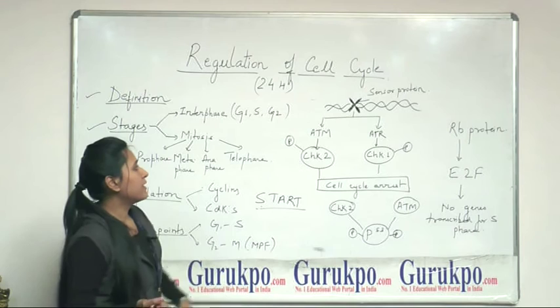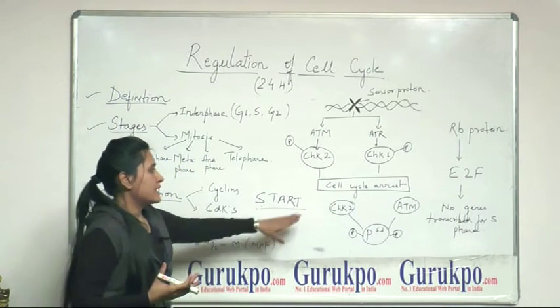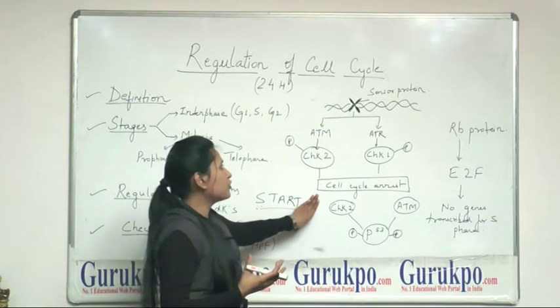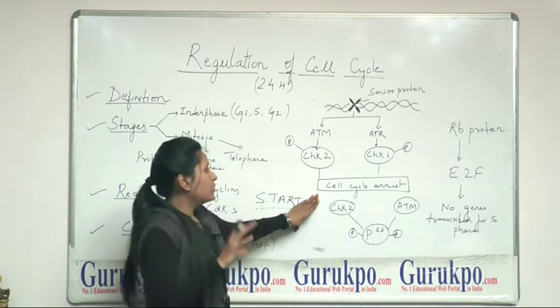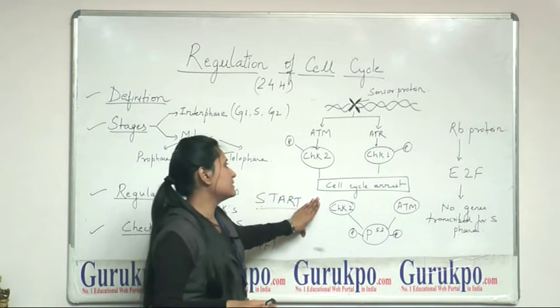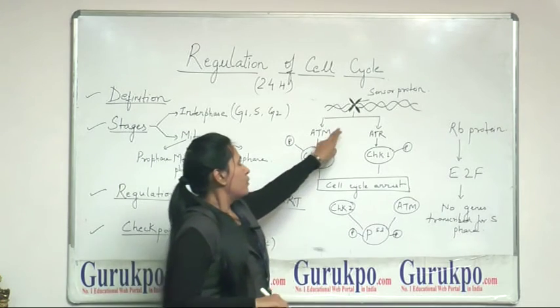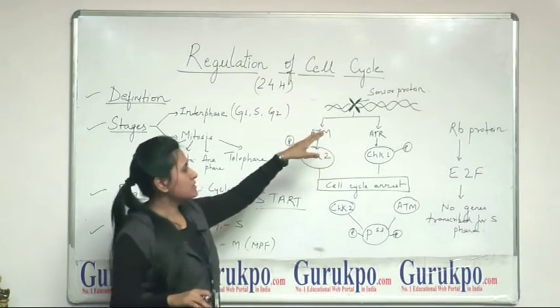Now, there are various kinds of other pathways that are helpful in the cell cycle arrest. If any problem occurred in the DNA, then the cell will automatically produce a signal that will cause cell cycle arrest. In this, some sensor proteins are present...